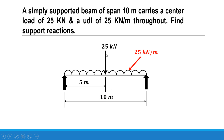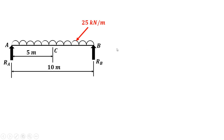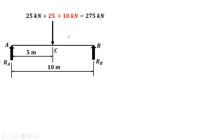However, there is already a load of 25 kilonewton acting at the center, so 25 into 10 will be added to this load. We remove the uniformly distributed load and convert it into a point load. The existing central point load of 25 kilonewton plus 250 kilonewton — indicated by the red part — gives a total of 275 kilonewton acting at the center. The beam is now converted from a UDL arrangement into an equivalent point load arrangement.